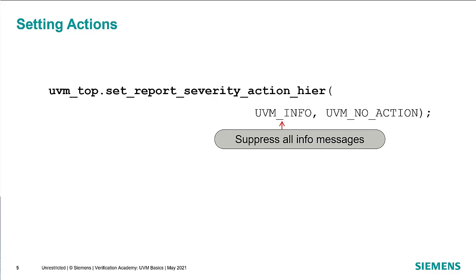In addition to setting the verbosity, there are other actions you can take. From UVM_TOP, you can call set_report_severity_action. That means for a given severity, you will take a particular action, and the _HIER suffix means this will apply to everything in the hierarchy from UVM_TOP on down — everything in your UVM system. So for UVM_INFO messages, specifying UVM_NO_ACTION will suppress all messages. All messages get passed into what we call the report handler in UVM, and these methods tell the report handler how to process those messages.